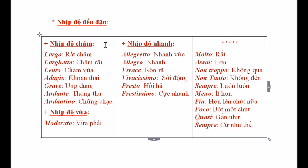Nhịp độ đều đặn được ghi với những chữ tiếng Ý: nhịp độ chậm, vừa, nhịp độ nhanh. Larghissimo là rất chậm. Larghetto là chậm rãi, tức là nhanh hơn Larghissimo. Lento là chậm vừa, tức là nhanh hơn Larghetto, và cứ lần lượt như thế, chữ sau sẽ nhanh hơn chữ trước. Ký hiệu cuối cùng - Prestissimo là cực nhanh. Ngoài ra các nhạc sĩ còn ghi thêm một số từ như: un poco (ít hơn một chút), meno (ít hơn), poco (bớt một chút), v.v.